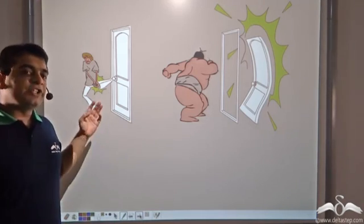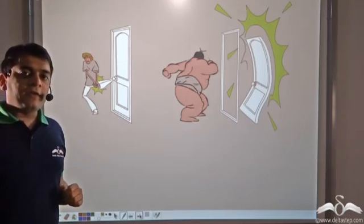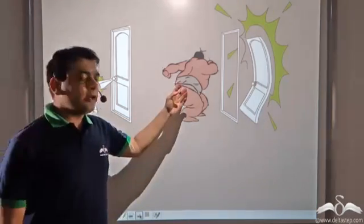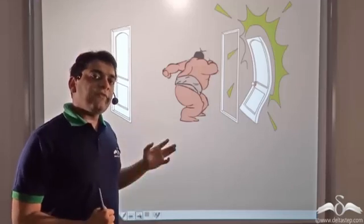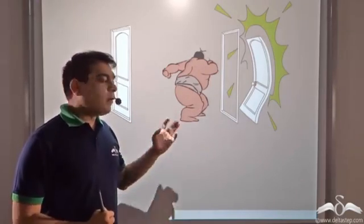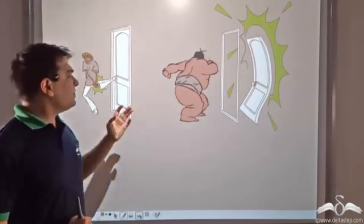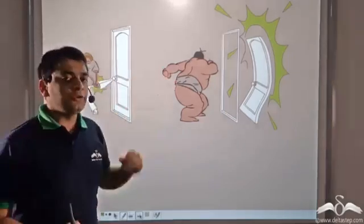So we saw that while Shaggy hurt himself in trying to open the door, the sumo wrestler was able to break the door with a single punch. So why was he able to do this? What physical differences do we see between Shaggy and the sumo wrestler?